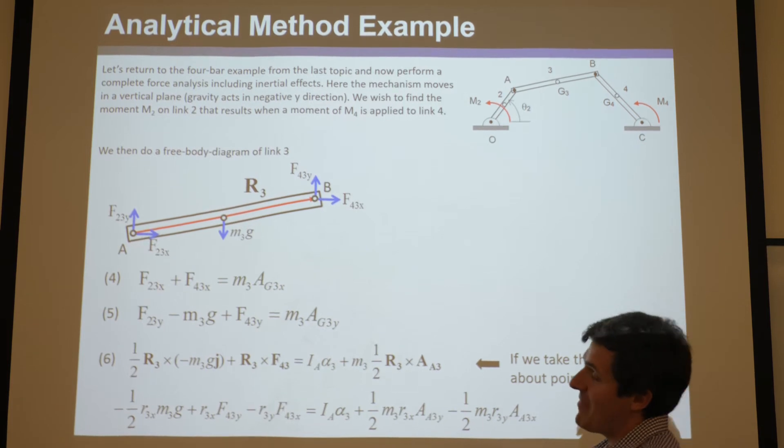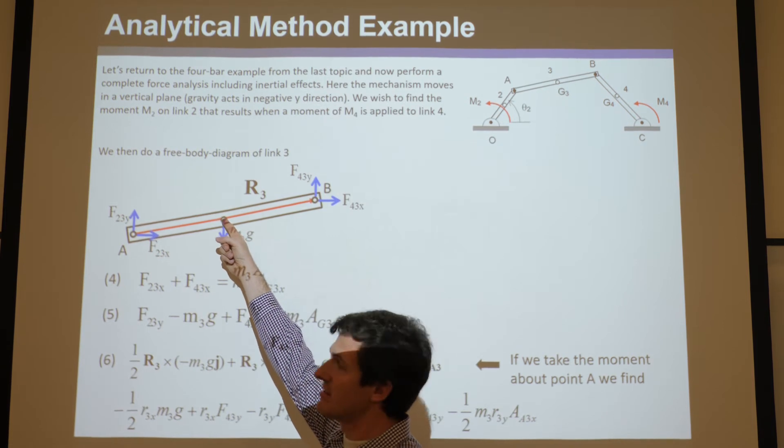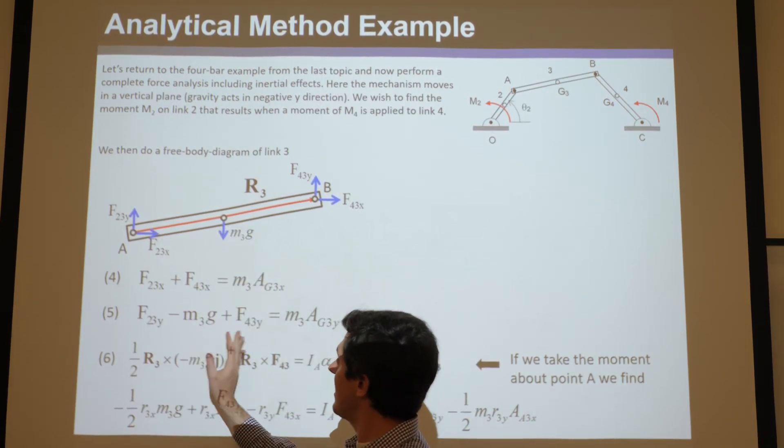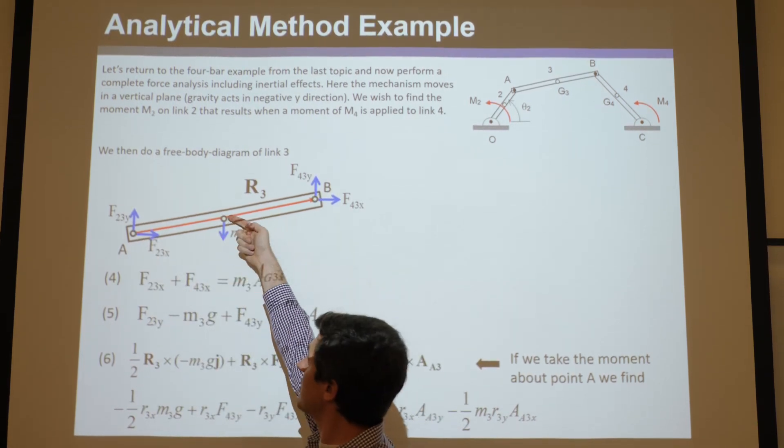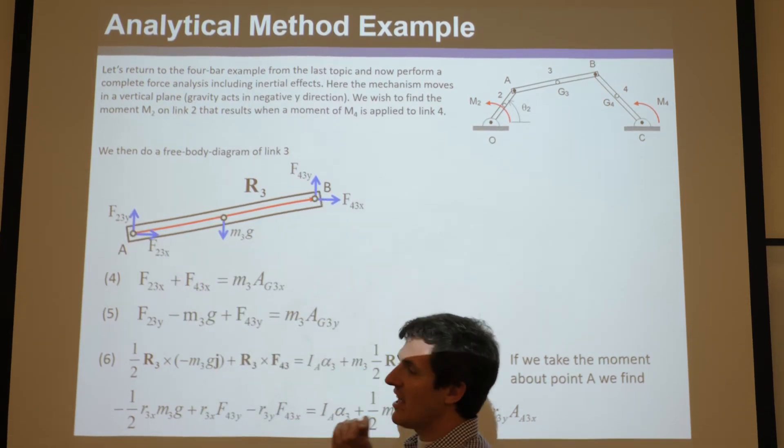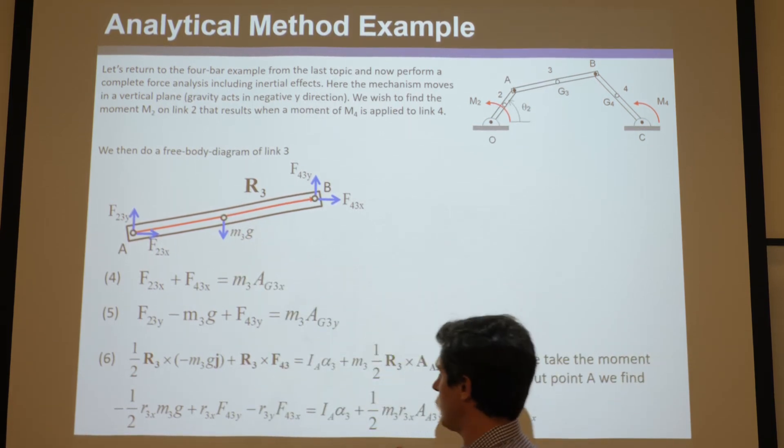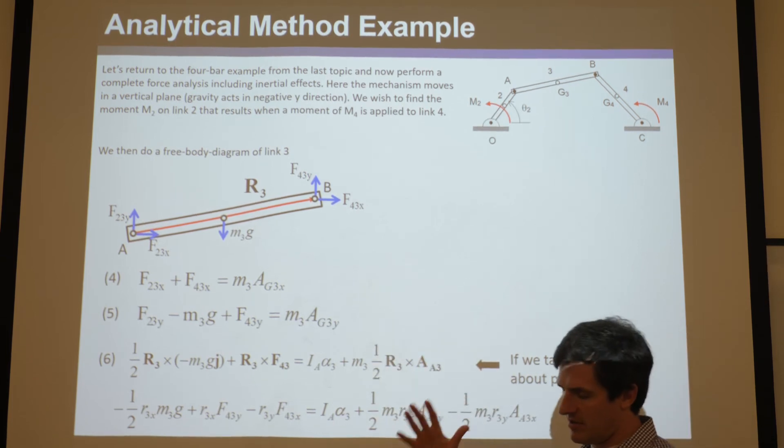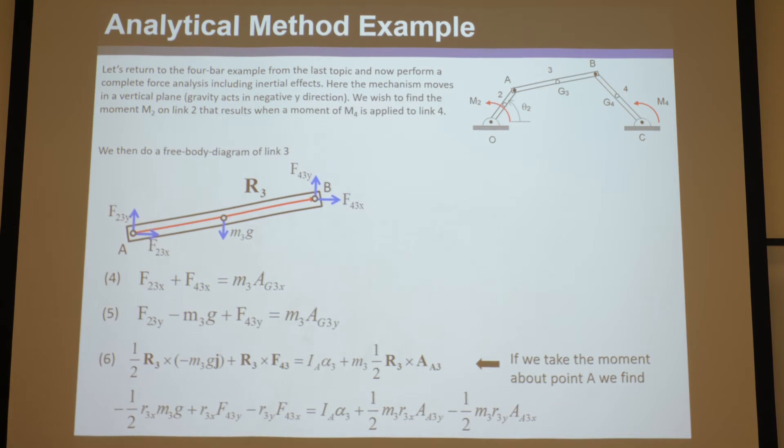Now again, maybe it would have been easier to take the sum of the torques about this point, the center of mass. mg would have gone away on this left side, and we would have just taken the cross product of all these forces - the vector that goes from there, the cross product of this force, then from there, cross product of that force - and then we would have set it equal to just I, the center of mass, times alpha 3. And we wouldn't have had to deal with all this, so it's up to you, whatever is easiest. But as long as you're correct, you'll get the right answer.